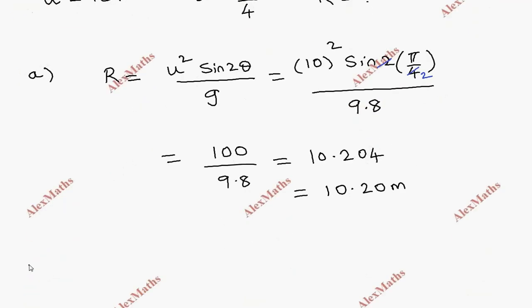Now for the Moon: the range on Moon uses the formula u squared sin 2θ divided by g. This is the acceleration due to gravity on Earth, 9.8.